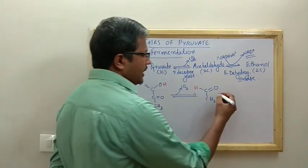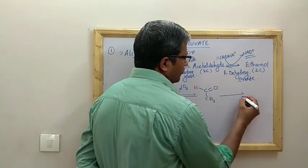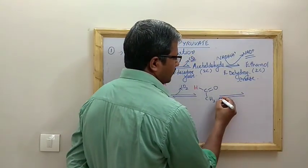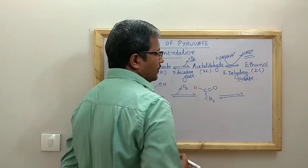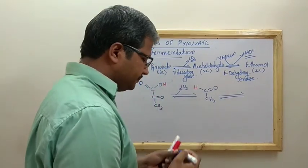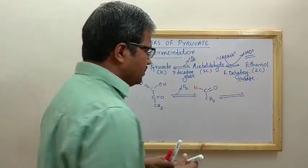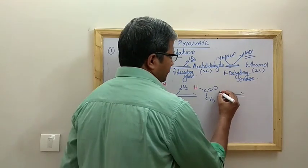To summarize this step structurally: we require NADH + H⁺ as the reducing agent, which is converted to NAD⁺, and those two hydrogens are added to acetaldehyde to produce ethanol.